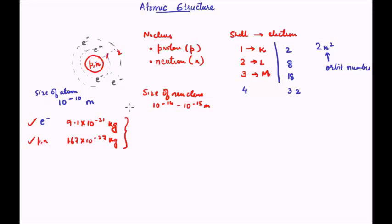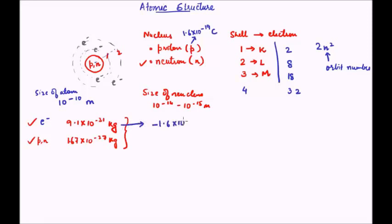Now let us see the charges of each particle. Neutrons are neutral — they do not have any charge. Protons are positively charged; each proton carries +1.6×10⁻¹⁹ coulombs. Each electron carries −1.6×10⁻¹⁹ coulombs. So the charge of the proton and the electron are equal in magnitude and opposite in sign.